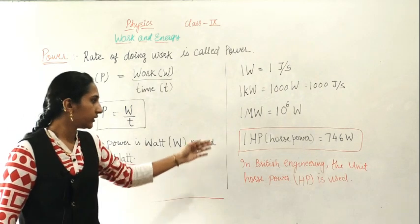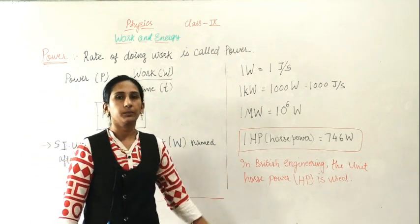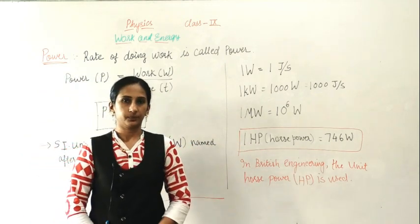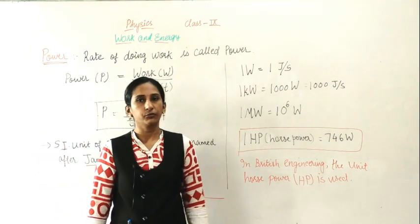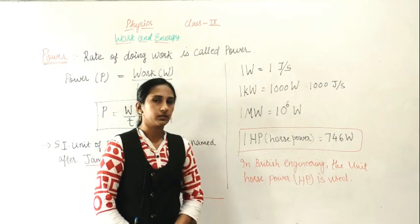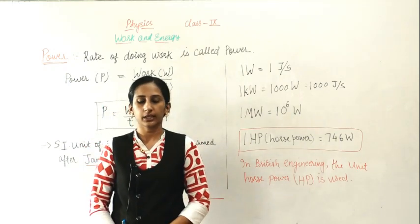So these are the different units. As you know, the horsepower is the unit used in the British engineering system. So horsepower is 746 Watt. This is very important. Just read the topic from the textbook. Thank you.